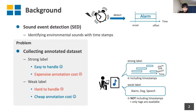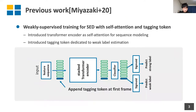Strong labels include timestamps, so they are easy to handle, but annotation cost is expensive. On the other hand, weak labels do not include timestamps — only tag information is available. To tackle this problem, in our previous work, we proposed a weakly-supervised training scheme utilizing weakly-labeled training data for SED.